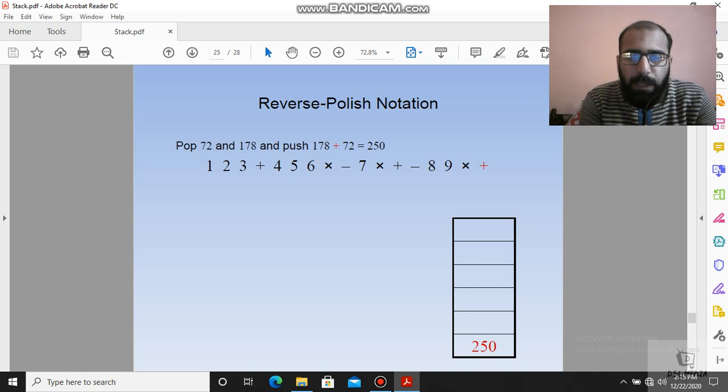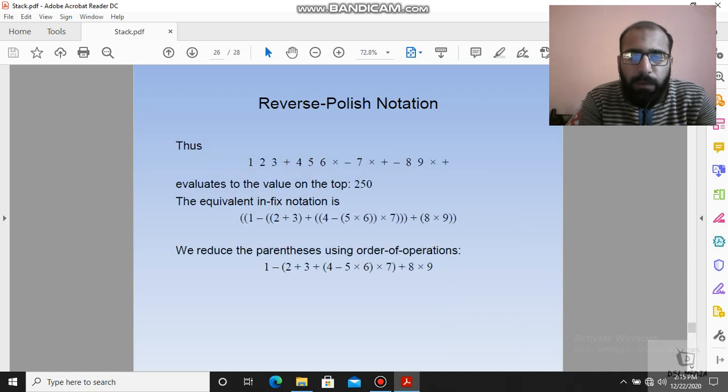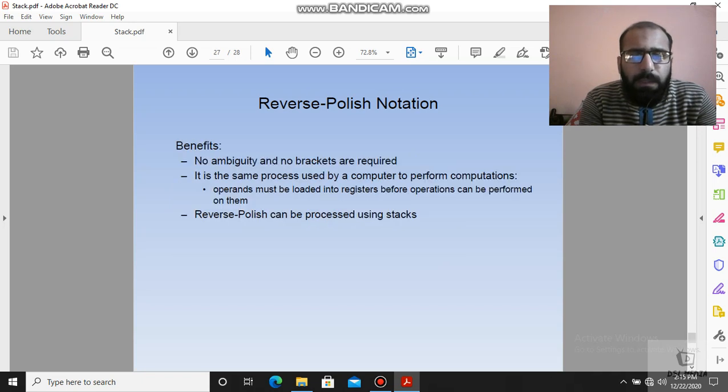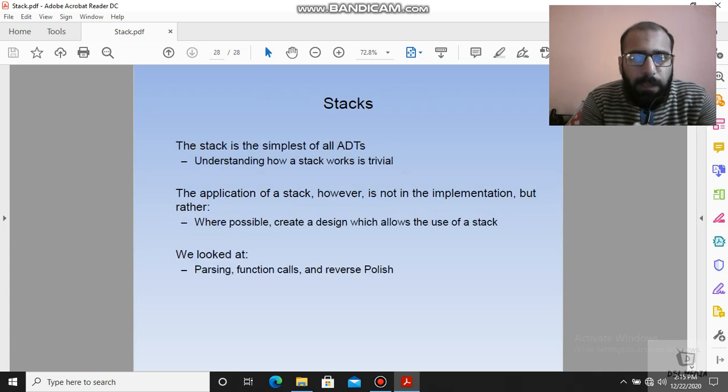This is a basic overview of reverse Polish notation in which we perform arithmetic operations with numeric numbers. This is the benefit: no ambiguity and no brackets are required. This is the same process used by a computer to perform computation. This is how we calculate using reverse Polish notation, which can be processed using stack. The stack is the simplest of all abstract data types. Understanding how a stack works is trivial. The application of stack, however, is not in the implementation but rather in creating a design which allows the use of a stack. We looked at parsing functional calls and reverse Polish notation.